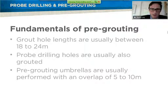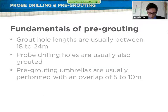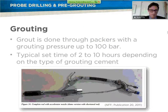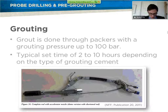That means you do a round of pre-grouting every 10 to 20 meters when doing it systematically. And hopefully, when you have dry material as you go into it again, at least the water pressure should be reduced dramatically.